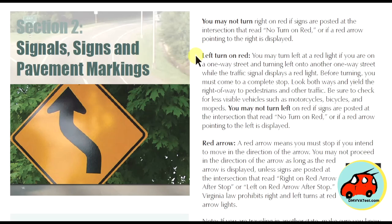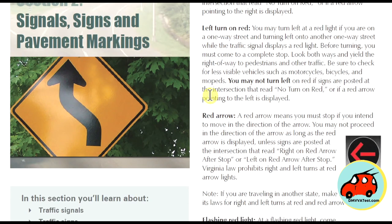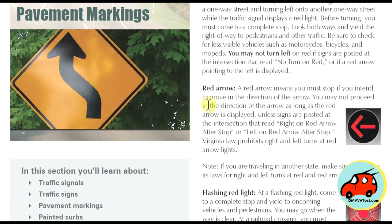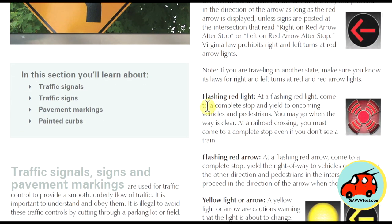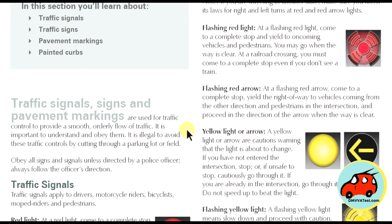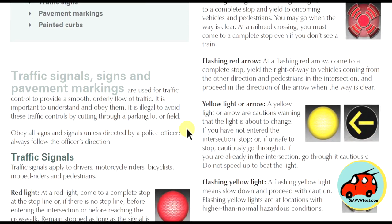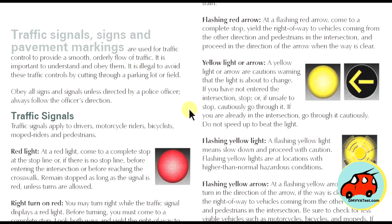Welcome back. In this section, we're going to be talking about signals, signs, and pavement markings — all the different things that you're going to see on the road, like traffic signals, traffic signs, pavement markings, and painted curbs. We're going to discuss what each one stands for and what you need to do.